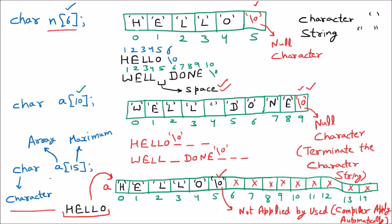Why is '\0' applied? It is for programming purposes. If I have to scan the array, I will start a for loop from zero and run it until I find '\0'. Once I find '\0', I know the whole string has been read. The creators of C thought there should be something to terminate the loop for character values — that's why '\0' is applied. '\0' is the terminator of the string.